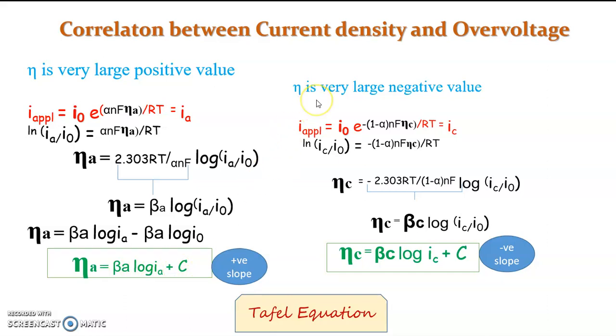Similarly, if the overpotential we are getting is a large negative value, which means the cathodic polarization predominates, we will get the equation like this. And from this, in the same way, we can consolidate the equation as ηC = βC log Ic plus C.